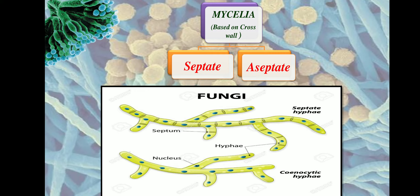Since filamentous fungi are multicellular, between each cell, based on the cross wall present, the fungal mycelium is divided into two types: septate mycelium and aseptate mycelium — also called septate hyphae or aseptate hyphae.